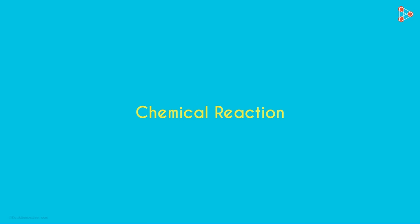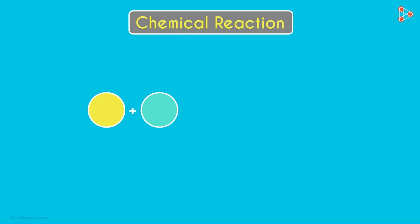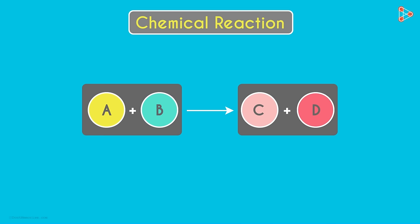What happens in a chemical reaction? Two substances react with each other to form new products. To understand this in a simple way, we can say that A and B react together to give C plus D. Two substances A and B react to give us two new substances C and D.